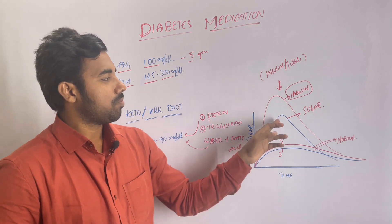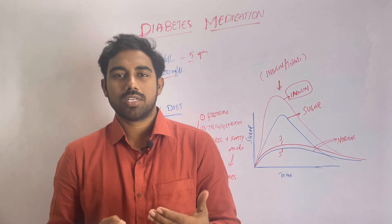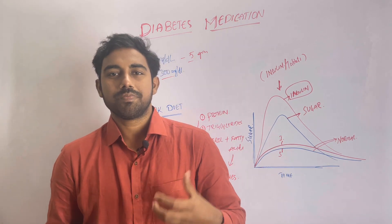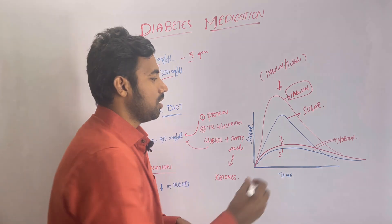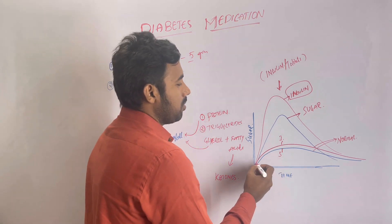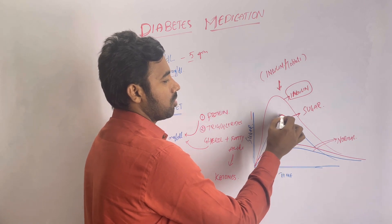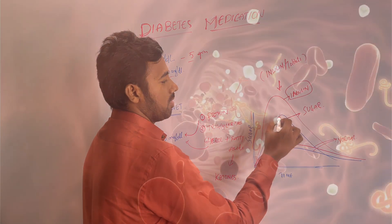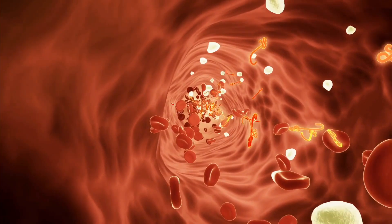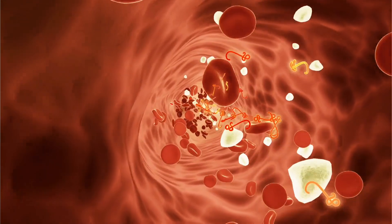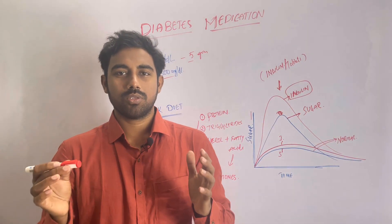Now, if you are a diabetic patient, your body will not absorb properly. That means you have elevated sugar levels in the blood. If you look at normal blood sugar, the body releases blood sugar levels into the blood.